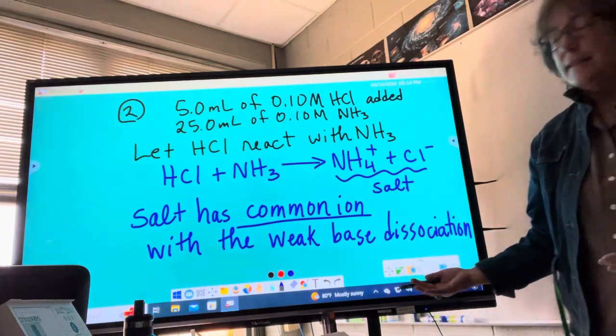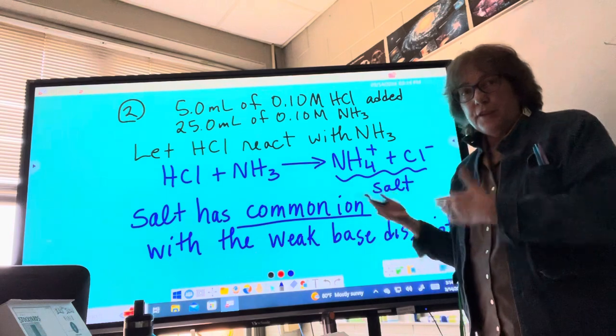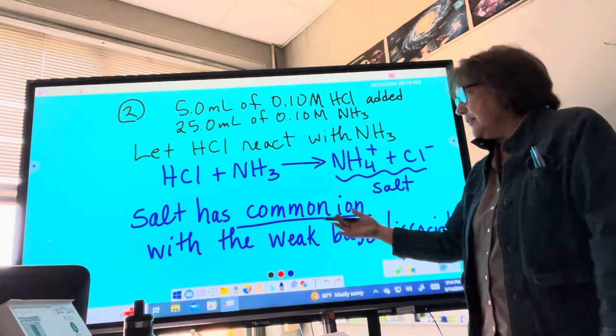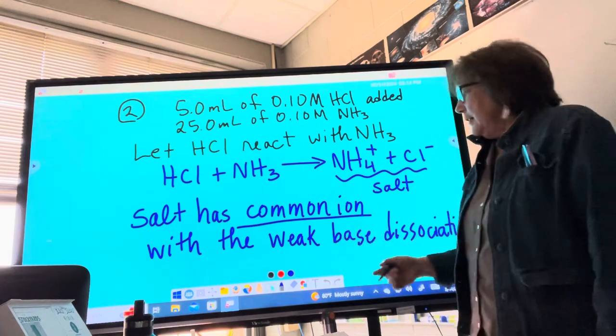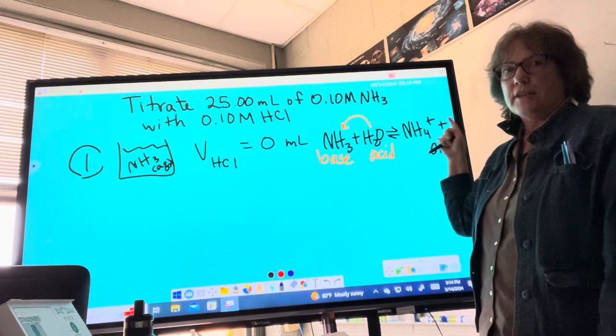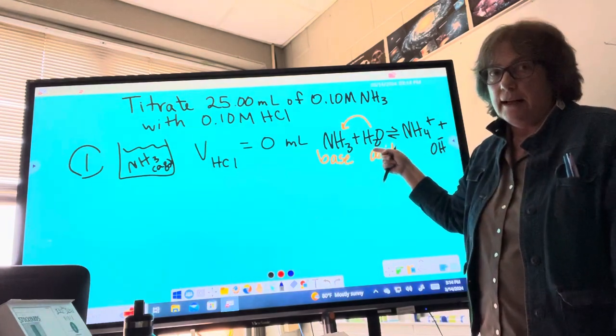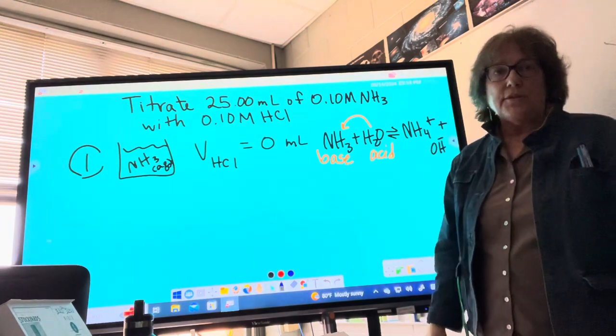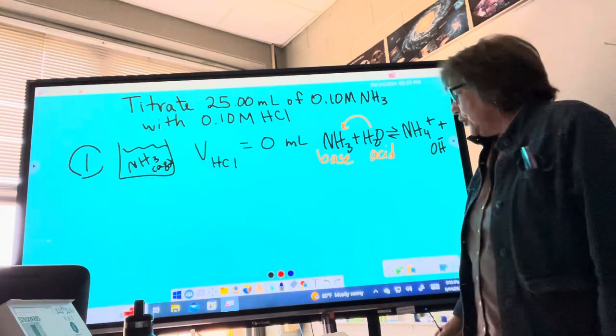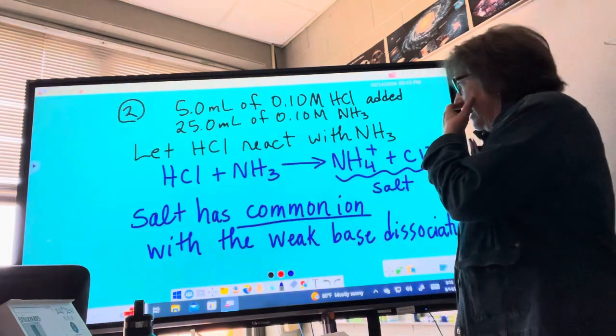What makes it nice is, in this particular example, when we have a weak base and its salt that has a common ion, the salt had this ion, the weak base dissociation was producing that ion. It makes the weak base associate less, and we make what is called a buffer. So it creates a buffer.